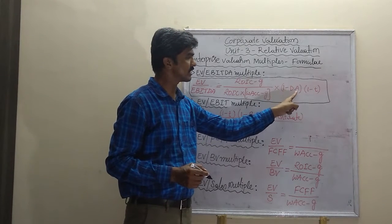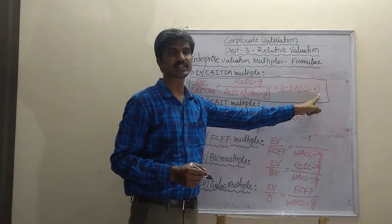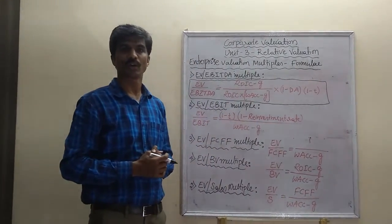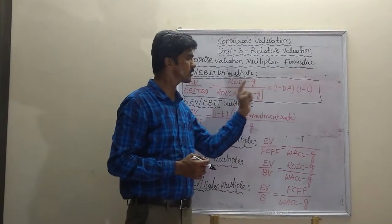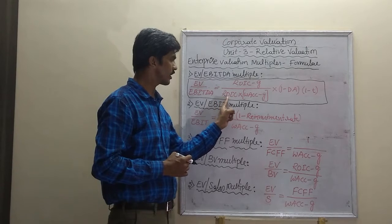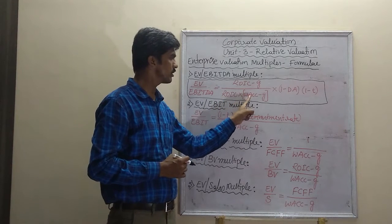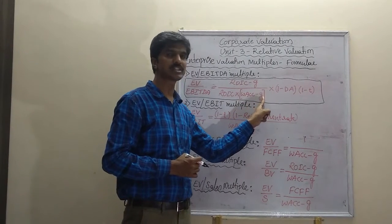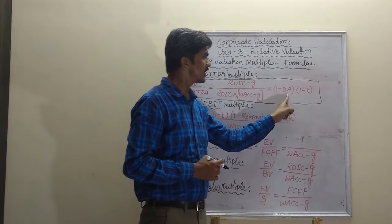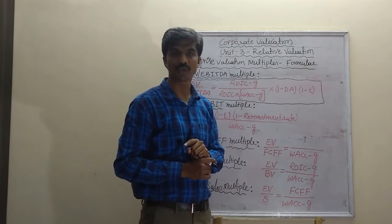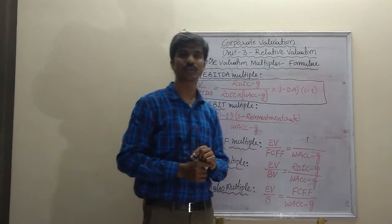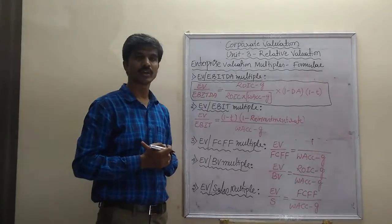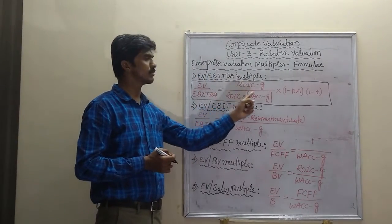1 minus DA into 1 minus T. Wherein ROIC stands for return on invested capital, G stands for growth rate, WACC stands for weighted average cost of capital, DA stands for depreciation allowance, and T stands for tax rate applicable to the company. So this is the formula we use in calculating EV to EBITDA multiple.